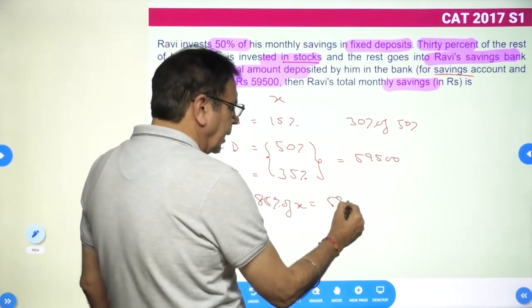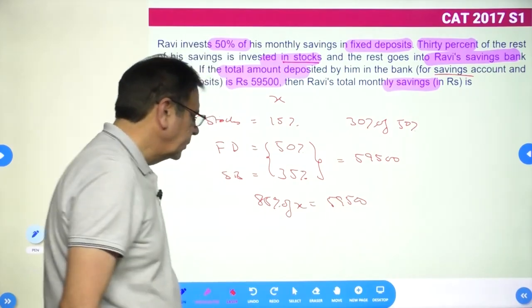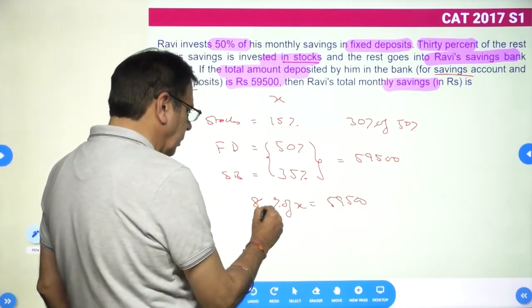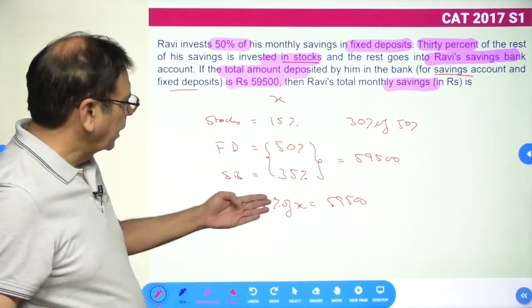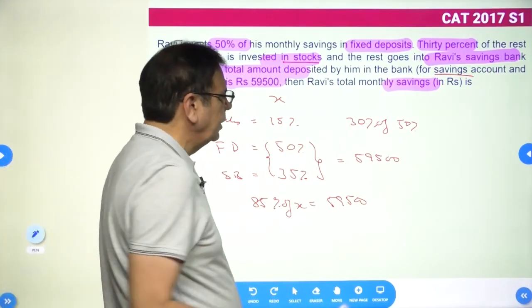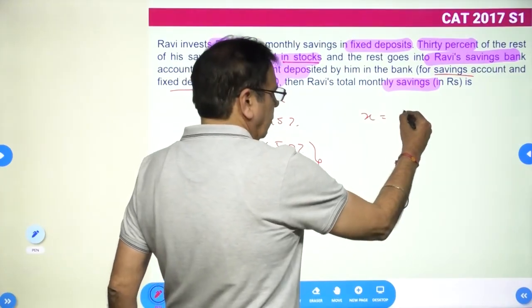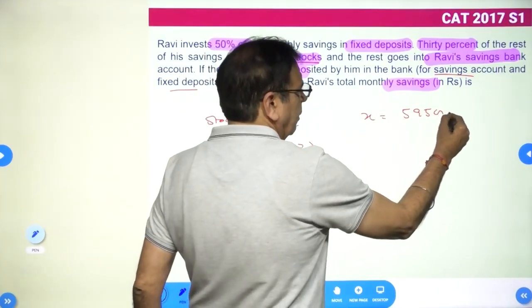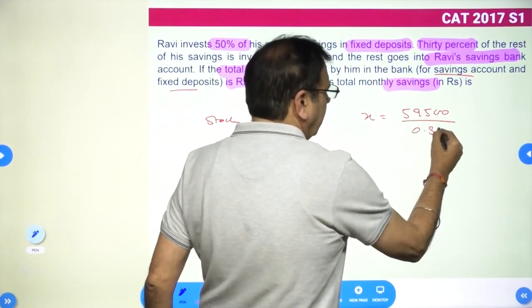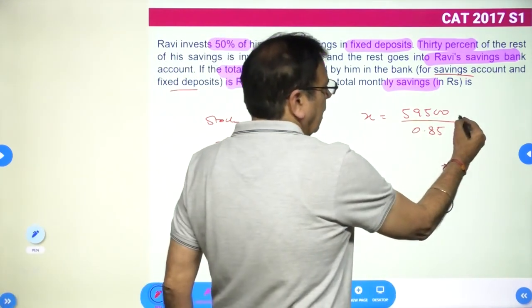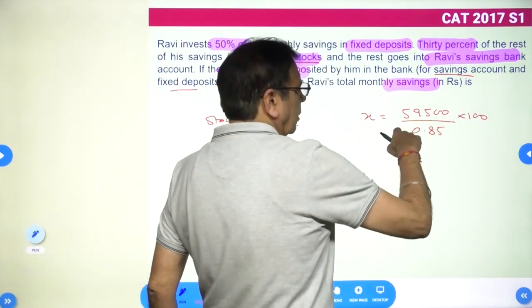As per the question, 85% of X equals 59,500. So we need to calculate X, which will be nothing but 59,500 divided by 0.85. Or you can multiply by 100 and remove these two decimals.